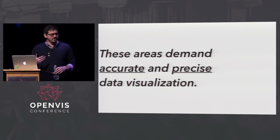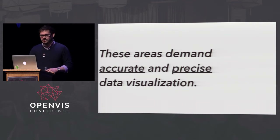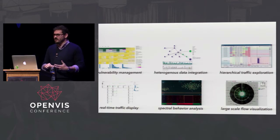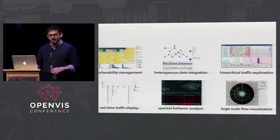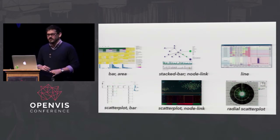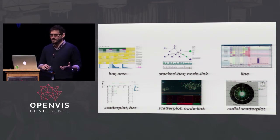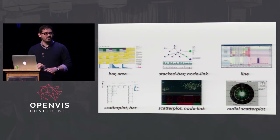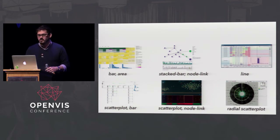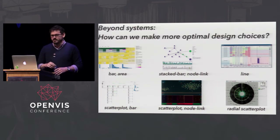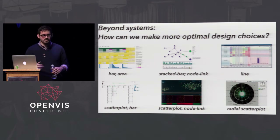This kind of gives us a license to put data visualization under a microscope to understand how it works. I experienced an existential crisis during my undergrad and PhD years - I was building cybersecurity visualization systems for a lot of different contexts. I knew there was a lot riding on the decisions made with these tools, and I realized I was just building the same things over and over: bar charts, area charts, stacked bar charts, node-link charts, line charts, radial scatter plots. I couldn't find a way to make an optimal design decision, and that led me to some really interesting research questions.